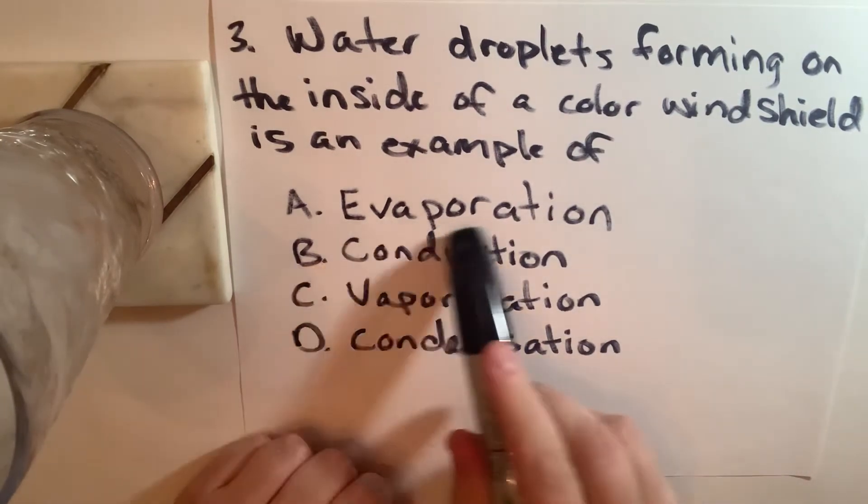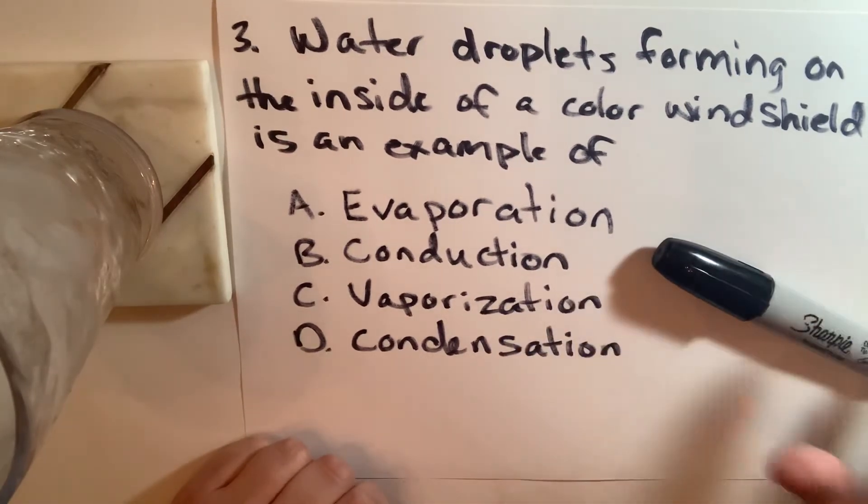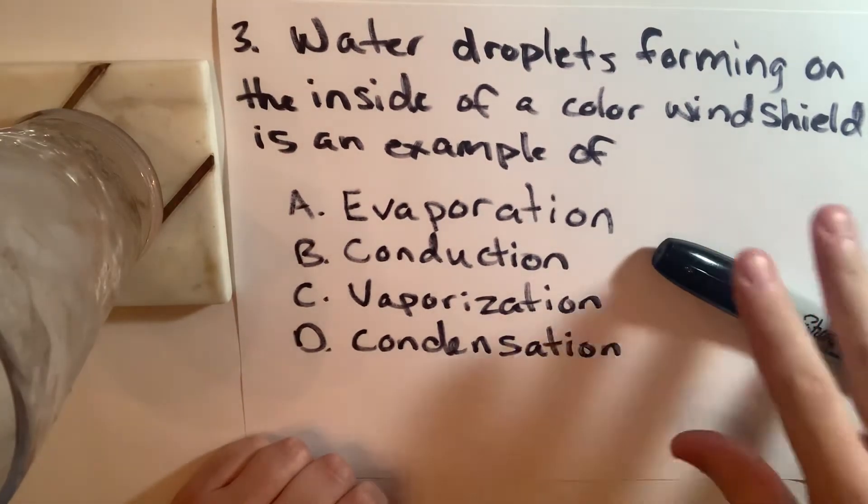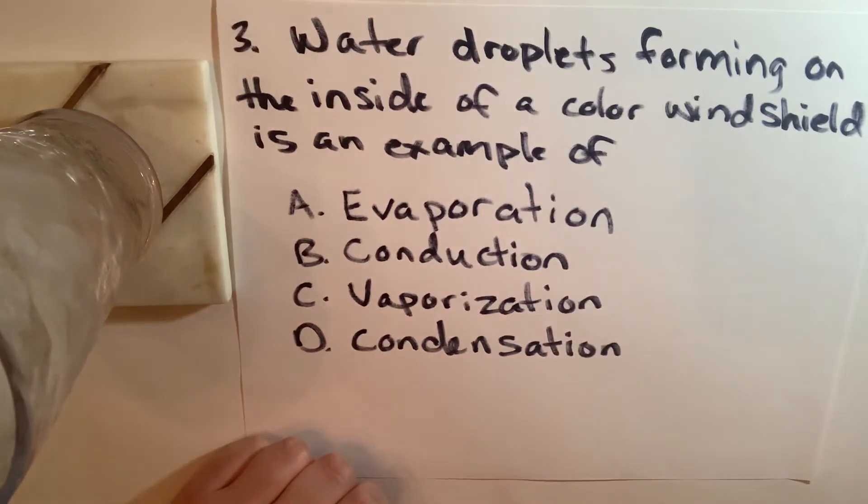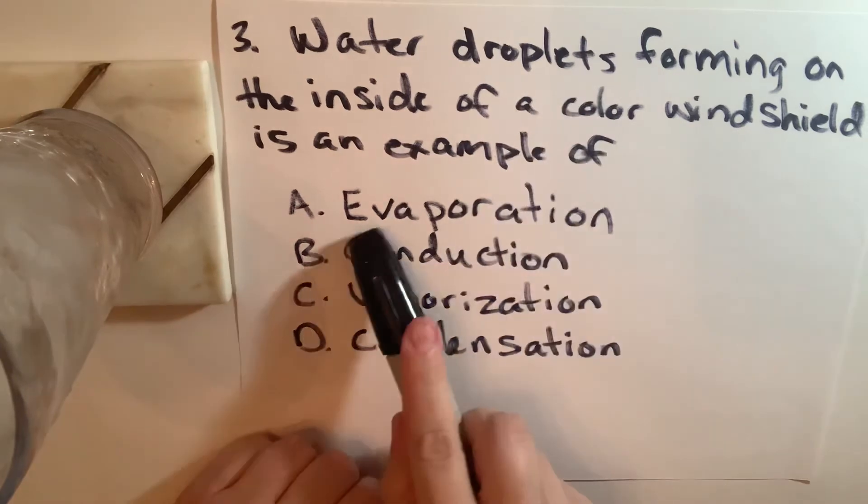Now, evaporation is when there's water on the ground and it starts to fade away because the sun is melting it back into the atmosphere as a vapor. So it's not that one because there would have to be water droplets formed. This would mean no water.